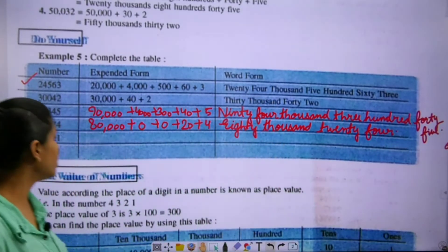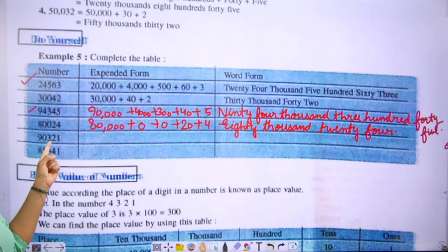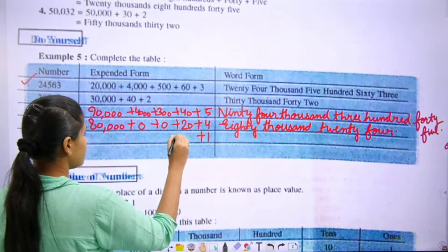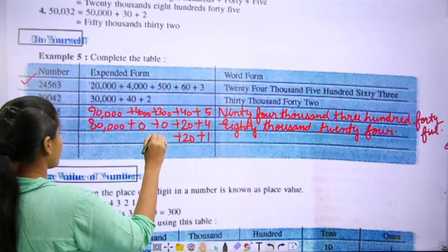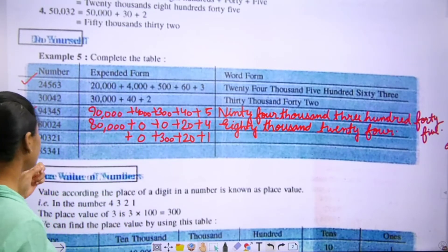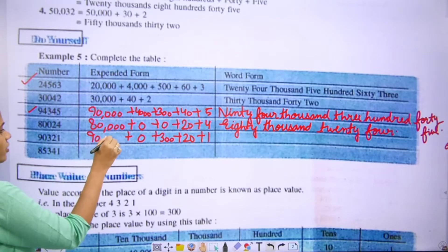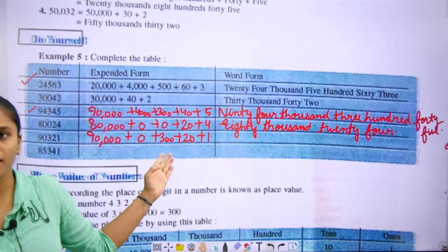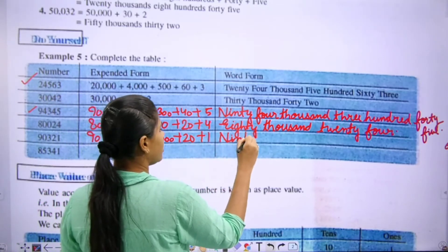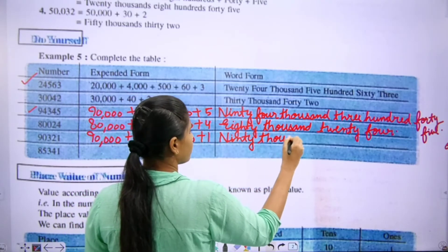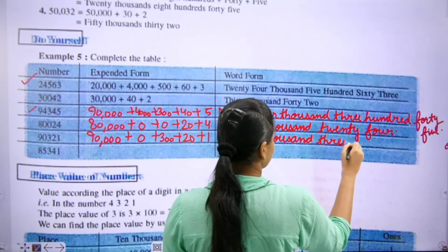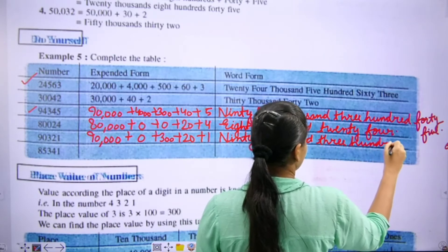Move to the next one. The place values are: ones, tens, hundred, thousand, then ten thousand. We will read it as 90,321. We have to write in words: ninety thousand, three hundred twenty-one.